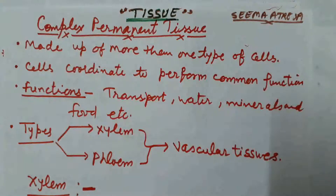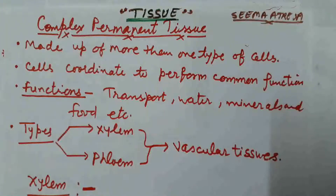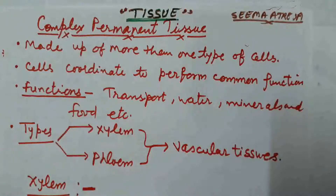Hi everyone, this is your biology class. I am your teacher Seema Atreja. Students, in the previous lecture we discussed the topic tissue, in which we studied two types of tissue: meristematic tissue and permanent tissue.